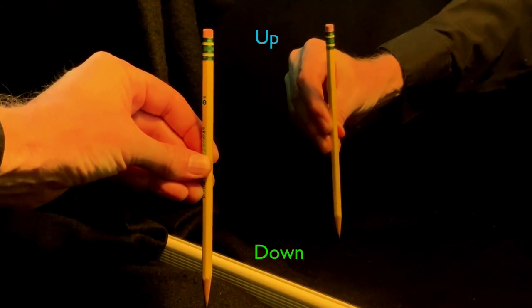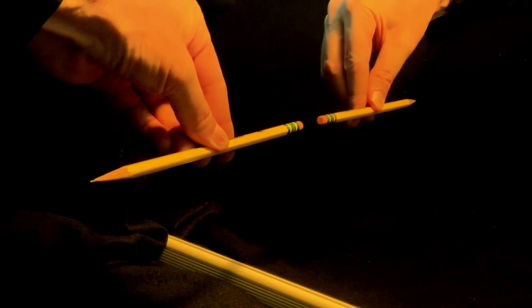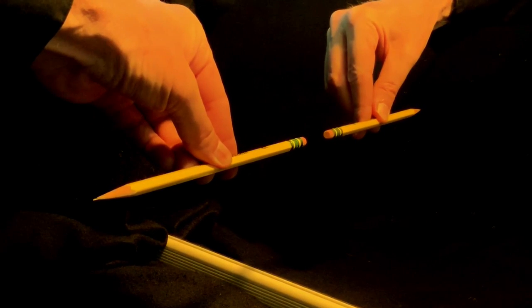But here's where it gets trippy. Hold the pencil perpendicular to the mirror, with the tip pointing toward you. Let's define the tip of the pencil as the front, and the eraser as the back.